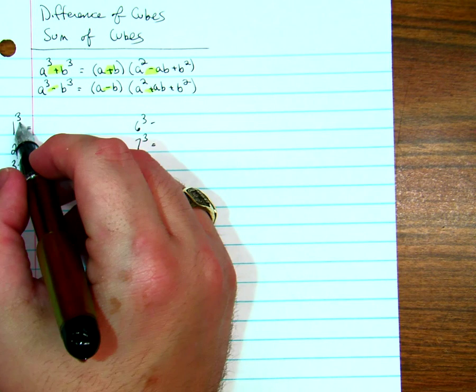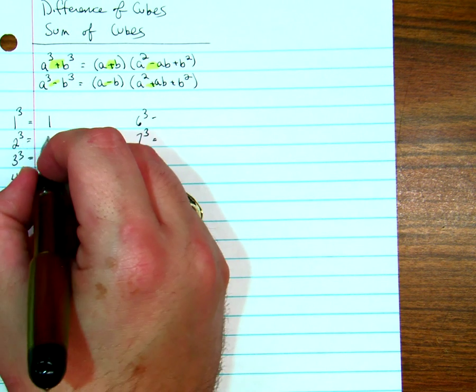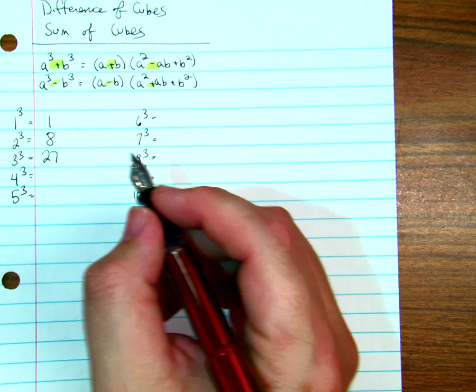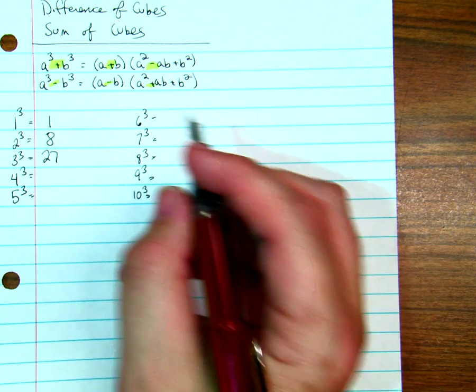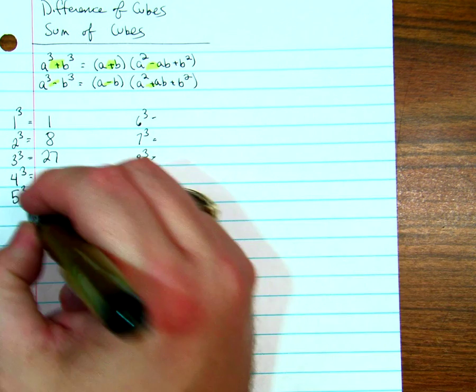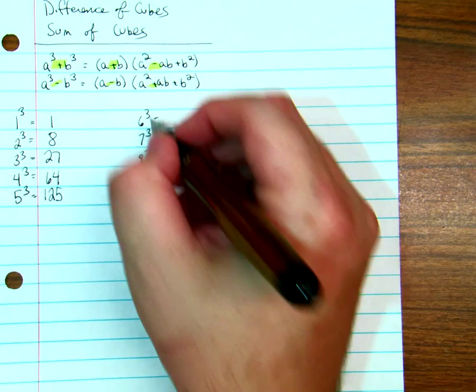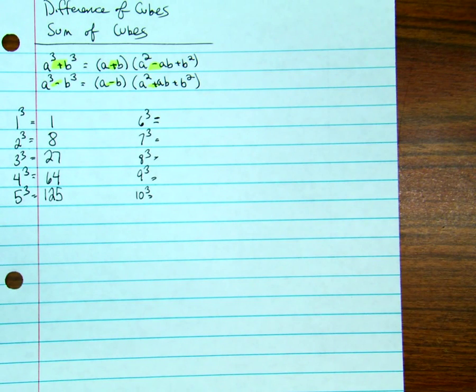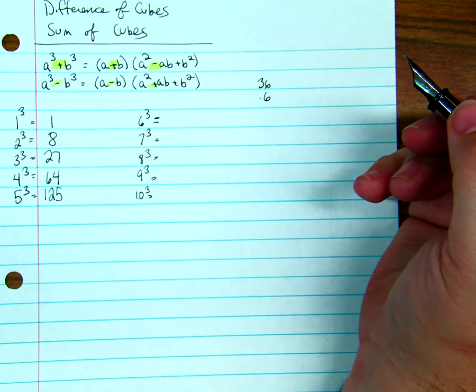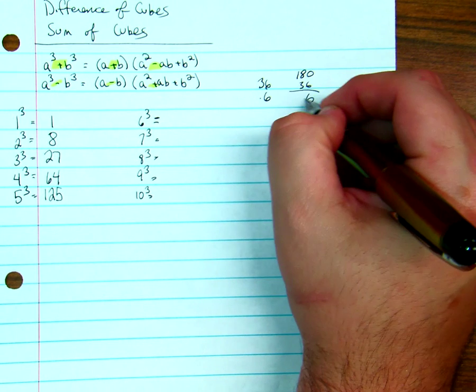So now, what's 1 times 1 times 1? 1. What's 2 times 2? 4. 4 times another 2 is 8. 3 times 3 is 9, times another 3 is 27. 4 times 4 is 16, times another 4 is 64. 5 times 5 is 25, 25 times another 5 is 125. Now this is where it gets a little bit more difficult. 6 times 6 is 36. So you can take 36, multiply it by 6. What's 6 times 3? 18. So I'm going to get 180. 6 times 6 is 36. Add those two together, 216.